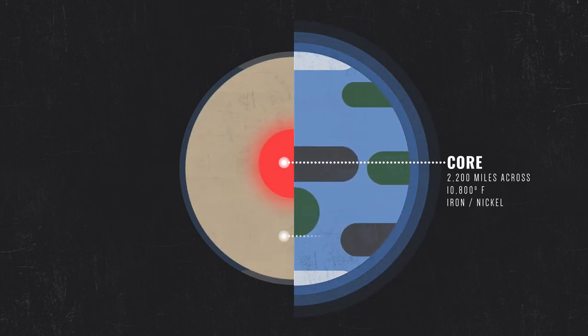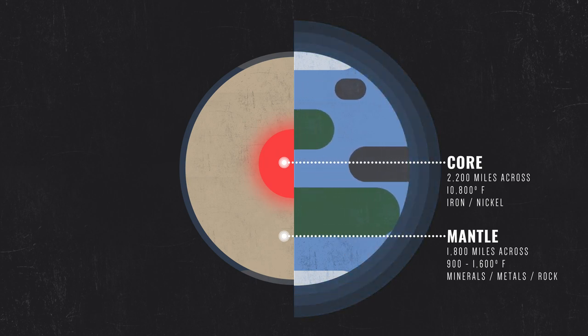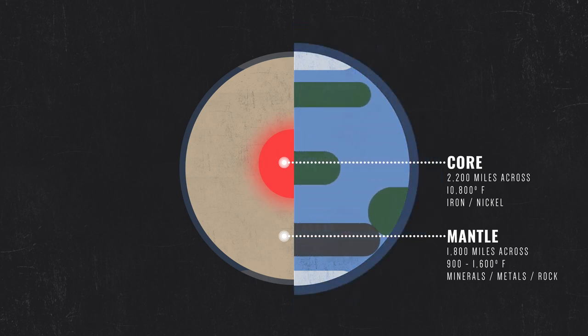Next comes the Earth's mantle, around 1,800 miles deep. This dense layer is made up of different minerals, rocks, and metals like magnesium, iron, and silicon.